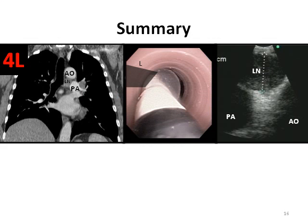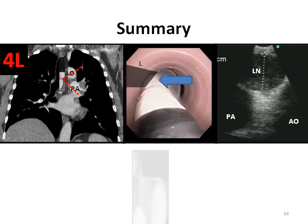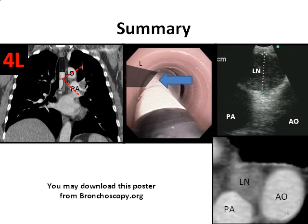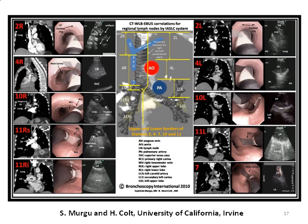To summarize, for station 4L, the coronal CT is useful because it correlates with the EBUS scanning plane. The scope is in the lower trachea at the level of the main carina, rotated laterally to visualize the left paratracheal region. The EBUS image thus represents the same structures as are seen on the coronal CT. This lesson helped demonstrate how specific computed tomography views can be used in the strategy and planning of EBUS-TBNA, and the same principles can be applied to understand correlations between CT and endobronchial ultrasound for each of the regional lymph node stations.